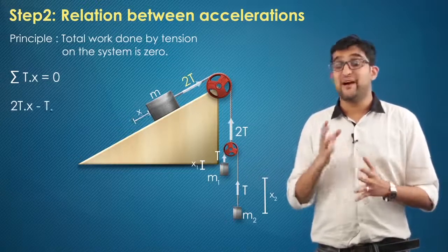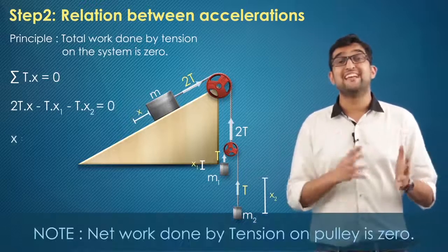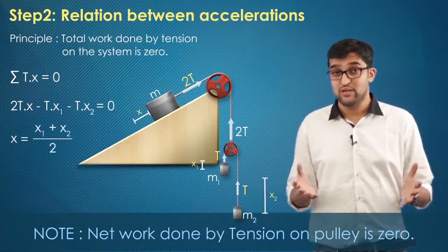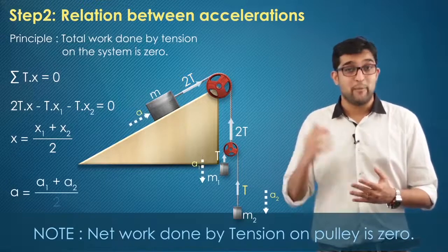We get 2T·X minus T·X1 minus T·X2 equal to zero. Solving, you will get X equals (X1 plus X2) by 2, and differentiating it twice, you get acceleration A equals (A1 plus A2) by 2.